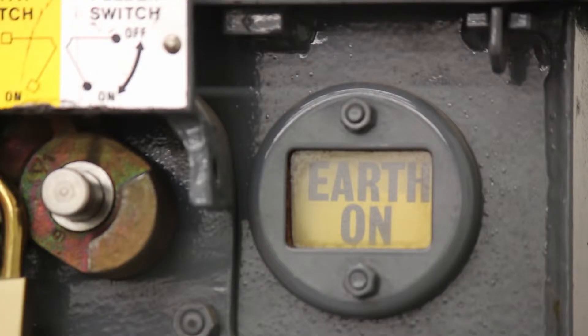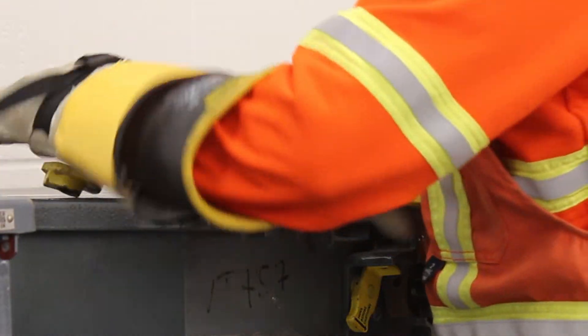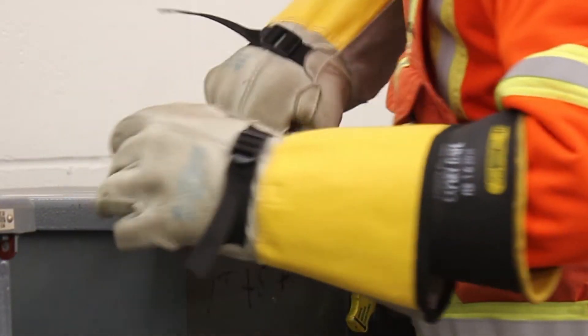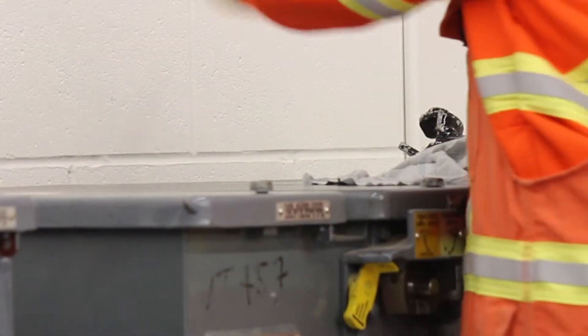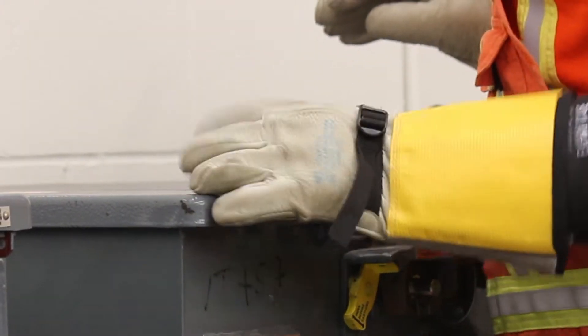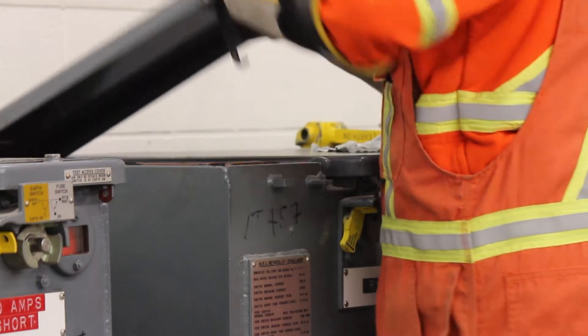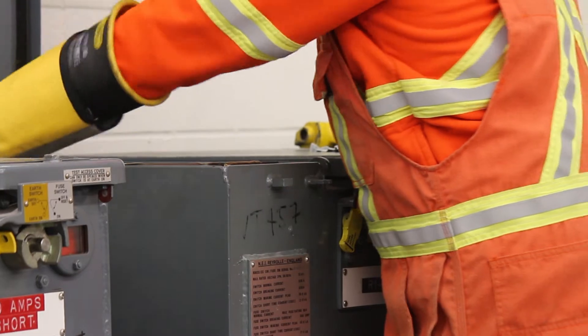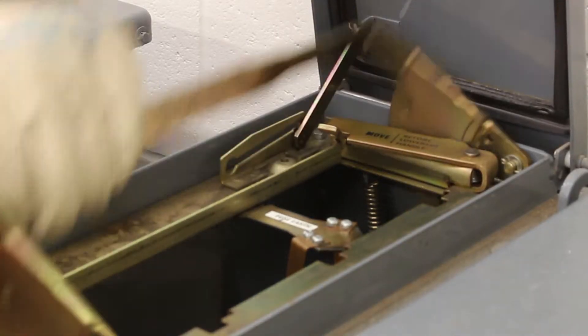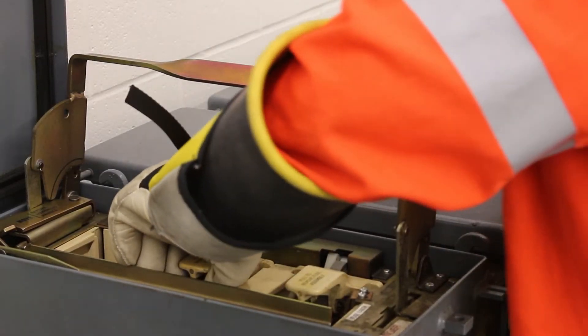Ensure the ray roll switch is in the earth position or the cover won't be accessible. To remove the top cover, unscrew the captive screw at the front of the top cover using the operating handle. Lift up the handle and remove the fuse from the fuse carriage.